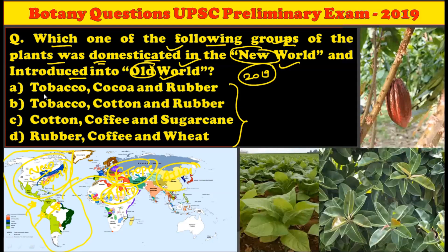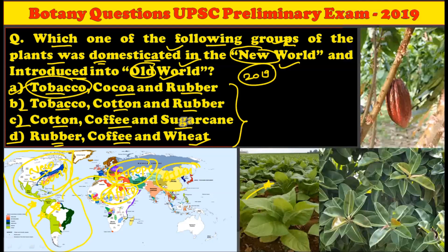The question has four options. The first is tobacco, cocoa, and rubber. Second, tobacco, cotton, and rubber. The third option is cotton, coffee, and sugar cane. And the fourth one is rubber, coffee, and wheat. Out of these four options, the tobacco plant, rubber plant, and cocoa plant — all three were domesticated in the new world, and they were later introduced into the old world. So option number one, that is tobacco, cocoa, and rubber, is the right answer for this question.